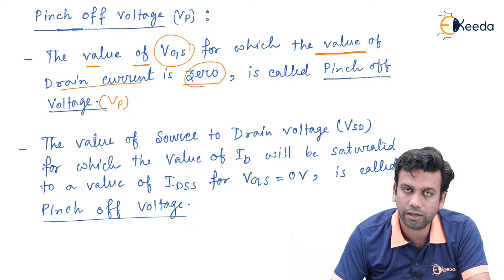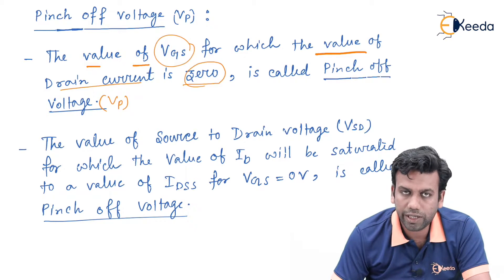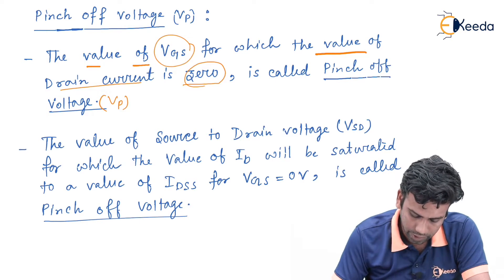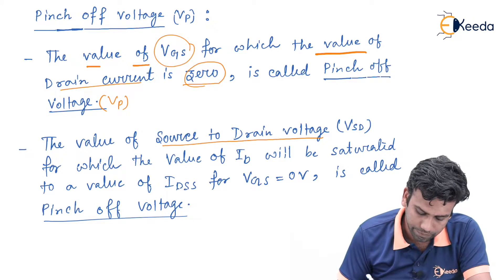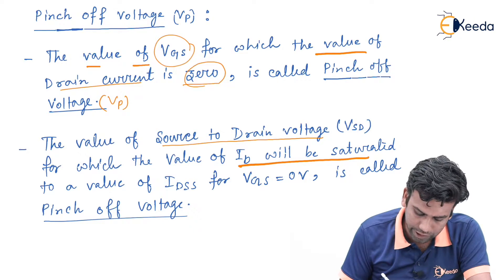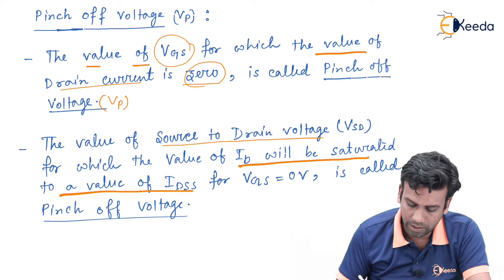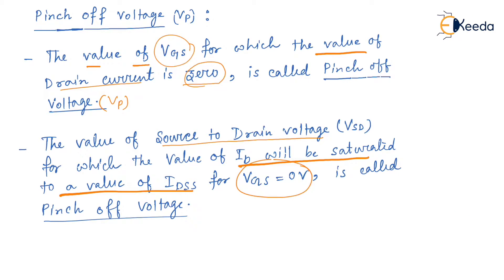Similarly, the pinch-off voltage can also be defined using the drain-to-source or source-to-drain voltage. In that case, the value of Vsd for which Id saturates to a value of Idss when Vgs equals 0 volts is called the pinch-off voltage. These are the two definitions: one using Vgs and one using Vsd. Now let us find the equation of the pinch-off voltage of a JFET.